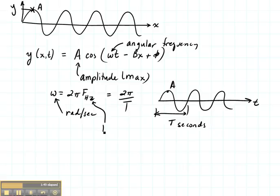The frequency is given in hertz, which is just one per second. So omega is radians per second, f is hertz or inverse seconds, and t, the period, is given in seconds.